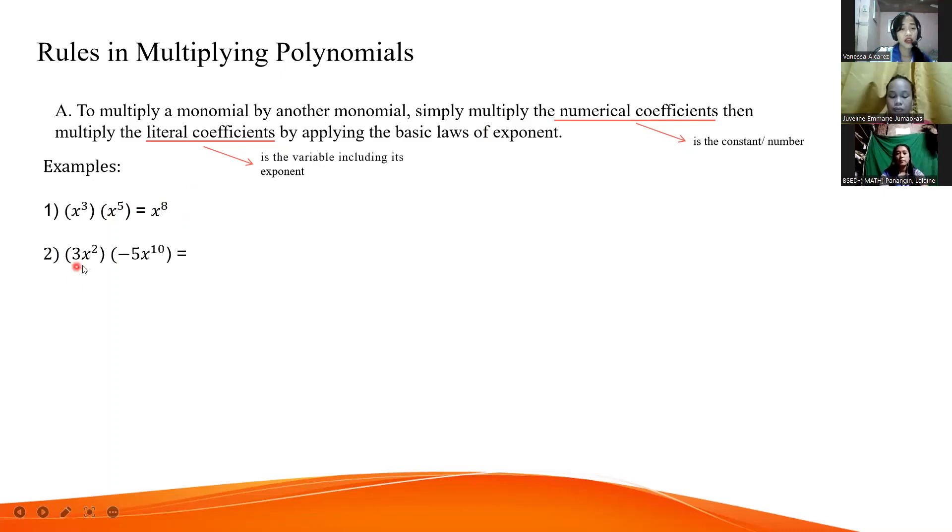The quantity 3x to the power of 2 times negative 5x to the power of 10. Simply multiply the numerical coefficient first. The numerical coefficient here is 3 and negative 5. Very good. 3 times negative 5, the answer is negative 15. For the literal coefficient, x squared times x to the power of 10, the answer is x to the power of 12. Very good.